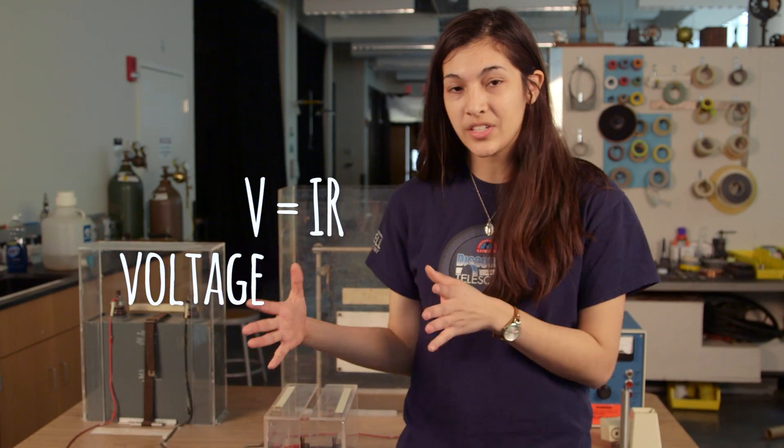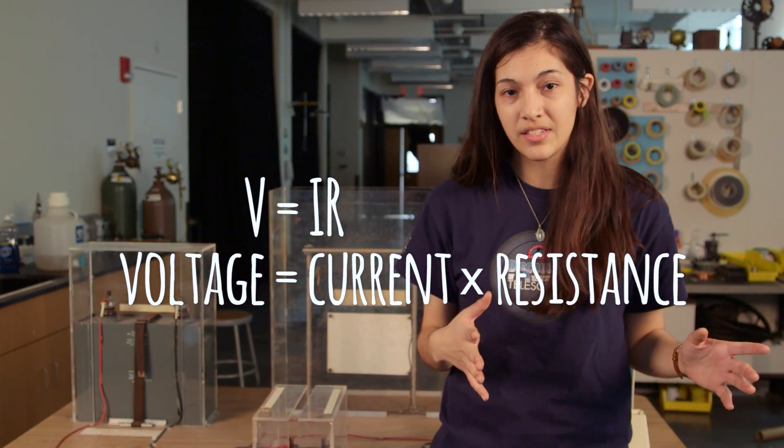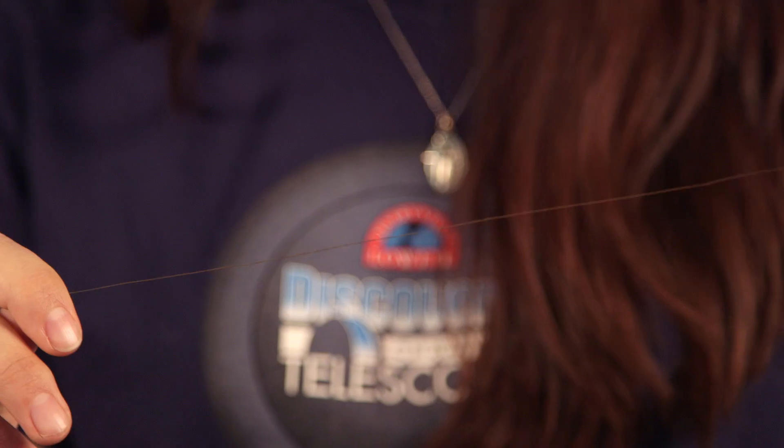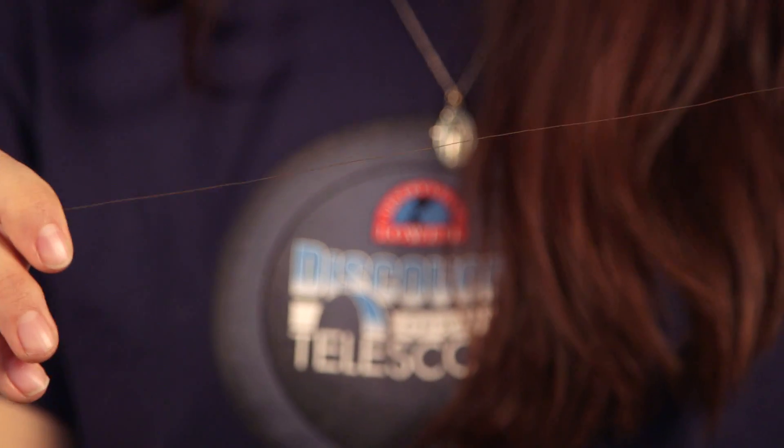You might have heard about Ohm's law in physics. V equals IR. Voltage equals current times resistance. Now the voltage in the capacitor after it's been charged up is going to be really high, and the resistance in this wire is really, really small. So the current going through it is going to be huge.